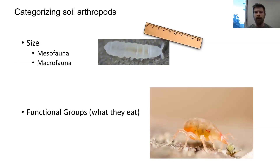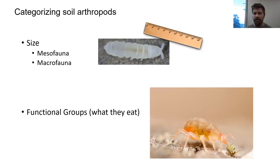Now I'm going to talk about how we categorize soil arthropods. There are primarily two main ways: the first is by size, where they fall into groups called the mesofauna and the macrofauna. The second way is by functional groups, which basically means what they eat. You can see here this example of a predatory mite eating a springtail — this would be an example of a predator functional group.